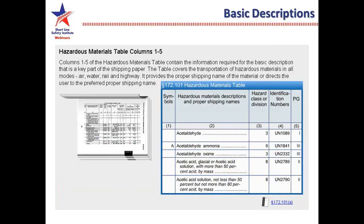Columns 1 to 5 of the materials table contain the information required for the basic description that is a key part of the shipping paper. The table covers the transportation of hazardous materials in all modes. It provides the proper shipping name or directs the user to the preferred proper shipping name. Looking at the first entry in column 2, acetaldehyde: it's a hazard class division 3, and its UN number is 1089. If a shipper offers that up to you, you can double-check to confirm it's properly spelled, has the right hazard class or division, the identification number, and the packing group, which is shown in column 5 as 1.